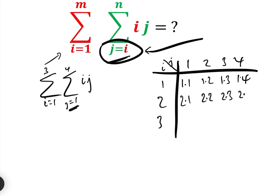Continuing the iterations: 2 times 3, 2 times 4, 3 times 1, 3 times 2, 3 times 3, and 3 times 4. The sum of all those iterations of i and j gave us 60. So that was the sum between i equals 1 and 3, and j equals 1 and 4.